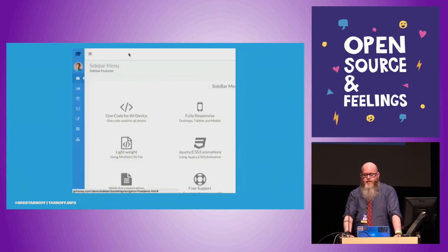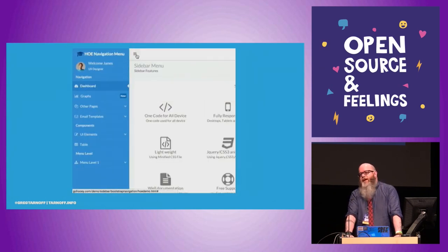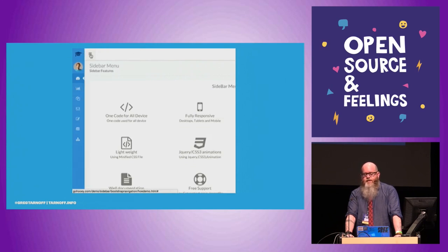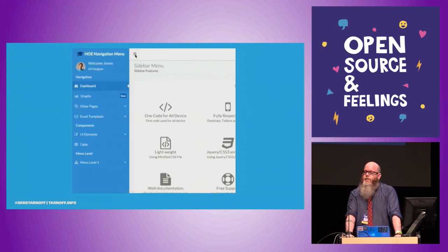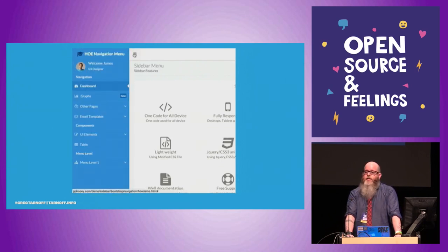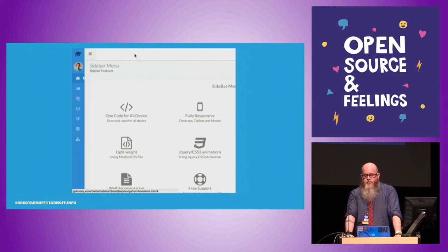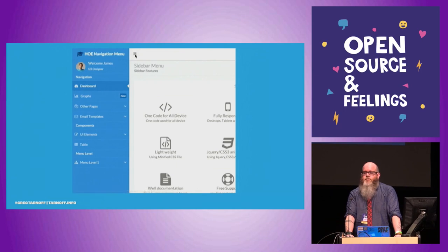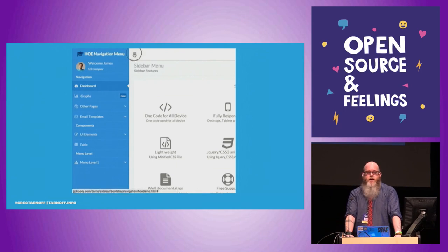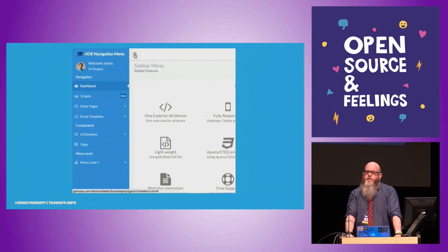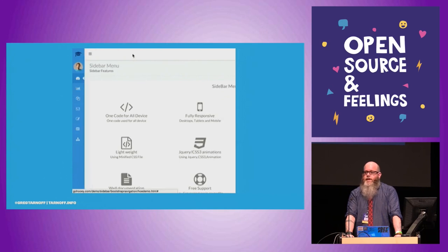Empathetic design learns the user. If the user doesn't need the navigation labels and can get away with just the icons, let them have it. If the user collapses the navigation so that they only have the icons, next time they come in it's automatically collapsed.